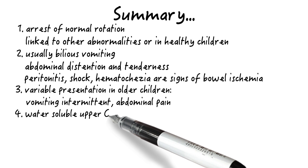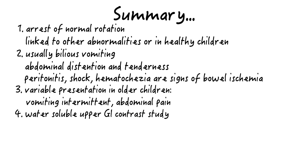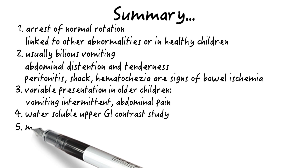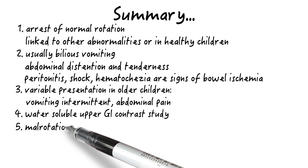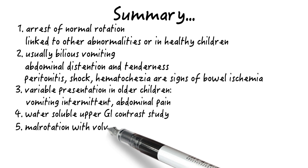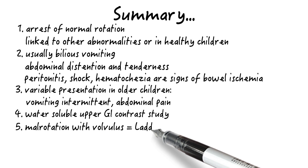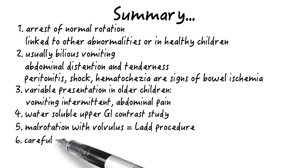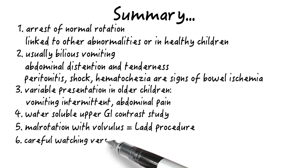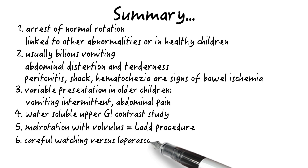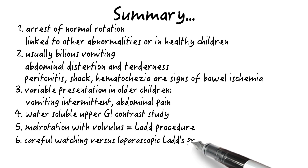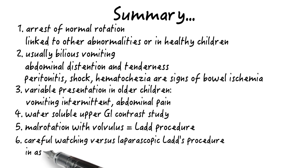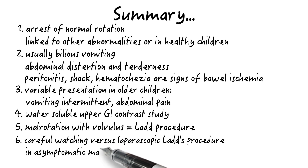4. A very simple and easy test to rule out malrotation is the water-soluble upper GI contrast study. 5. Malrotation with volvulus, regardless of the age of the patient and the presence of symptoms, is treated surgically with a Ladd's procedure. 6. Dealing with a patient who has an asymptomatic malrotation as an incidental finding is still debated. Observation is valid, but many would also consider a laparoscopic Ladd's procedure.